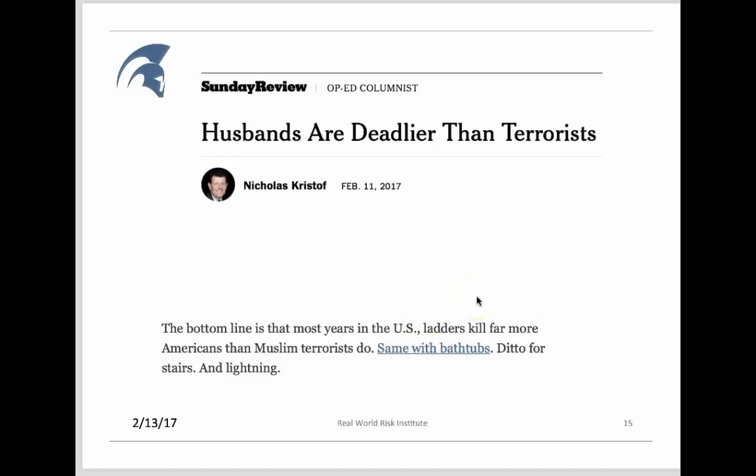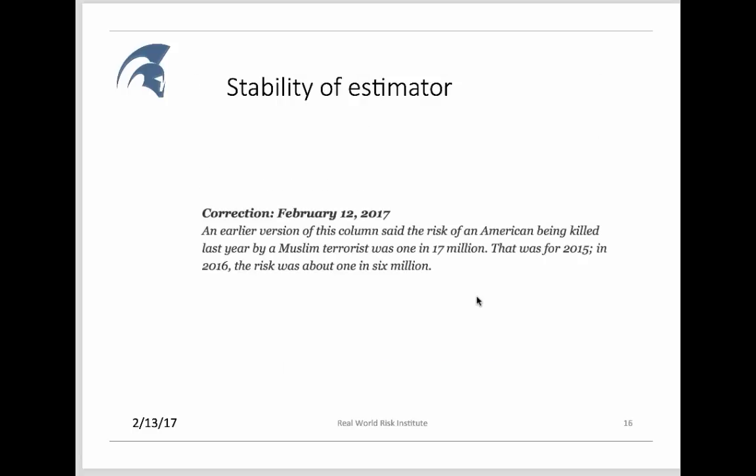The probability that the number of people killed by ladders, the probability of that number doubling in the United States without any change in the structure, any change in the ladders, any change in behavior of Americans, any change in alcoholic consumption, that number, the probability of that number doubling between say 2017 and 2018, something over the order of 10 to the minus, I don't know, somewhere between minus 10 and minus 20. It's so small you don't really care. It's very very small.